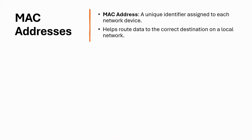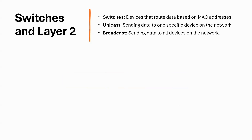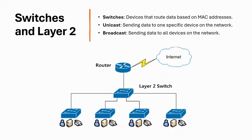To understand Layer 2, you need to know about MAC addresses. Every device on a network has a unique Media Access Control address, or MAC address, and this address helps identify where data should go within the network. A MAC address is a unique identifier assigned to each network device. At Layer 2, the most important device is the switch, which uses MAC addresses to determine which device should receive the data. They act like traffic controllers, ensuring that data is sent only to the intended device rather than broadcasting it to every device on the network.